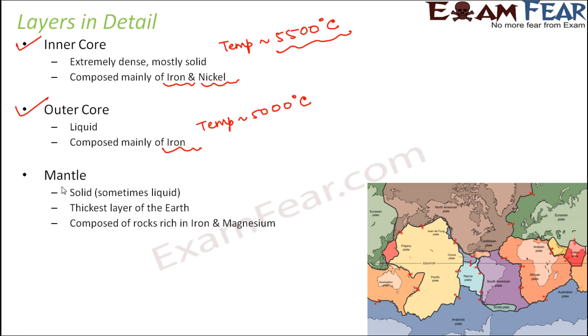The next one is mantle. Mantle is solid, however sometimes or in some areas it might be liquid. It is the thickest layer of the earth. You saw in the picture that was the thickest layer. It is composed of rocks which are rich in iron and magnesium. The temperature in mantle is around 1200 degree Celsius. So the temperature is gradually decreasing as we are coming towards the outer layer.